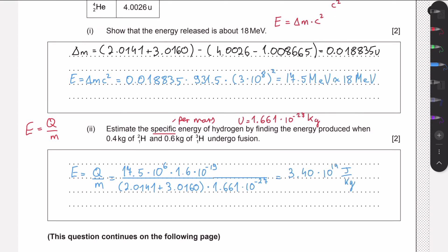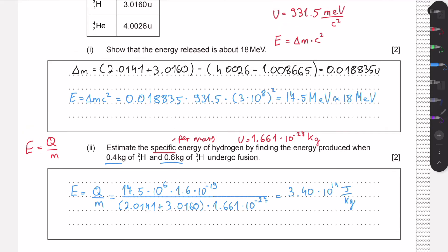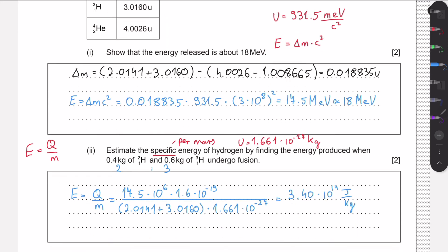The mass ratios here are essentially the same — these quantities are in a 0.4 to 0.6 ratio, which is equivalent to the 2-to-3 ratio of the atomic masses, which is why we can use this approach directly.